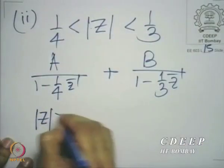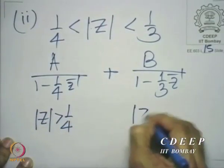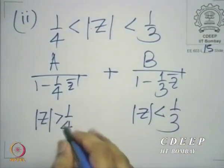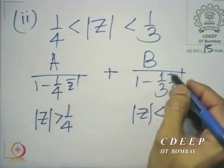The second possible region of convergence is ¼ < |z| < ⅓. This is a little tricky. When this is the case, the partial fraction expansion does not change — we still have A/(1 − ¼ z⁻¹) + B/(1 − ⅓ z⁻¹). But |z| is greater than ¼ yet less than ⅓, so there is a different way by which we treat each term.